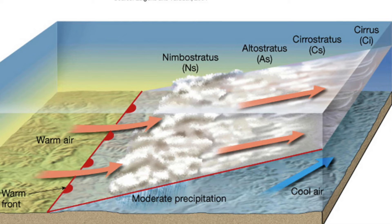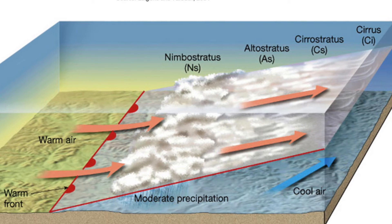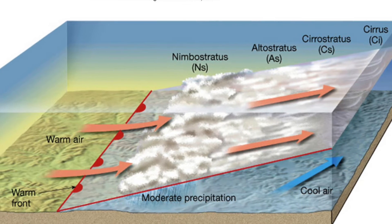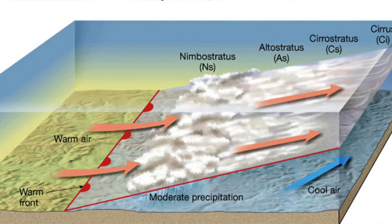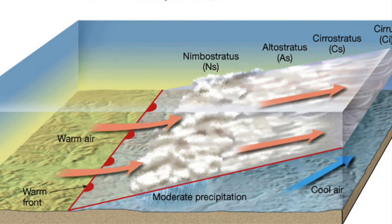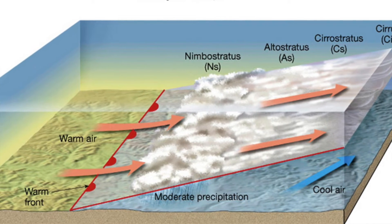The typical cloud formation you'll see in a warm front, in order, is cirrus, cirrostratus, altostratus, nimbostratus, and stratus.